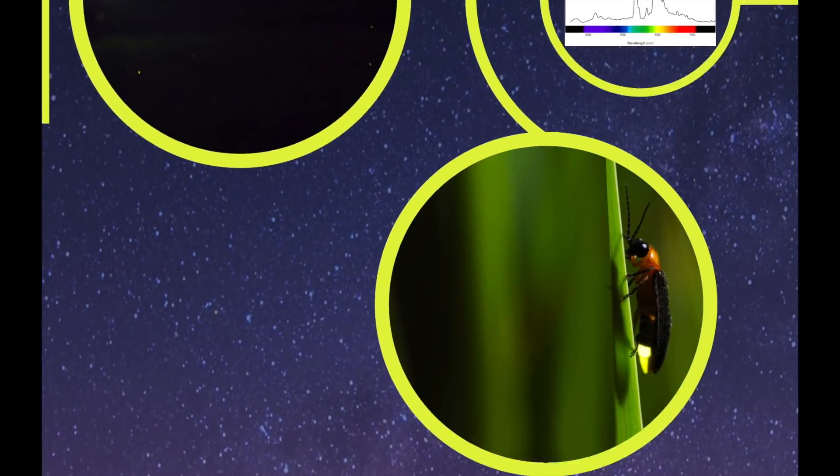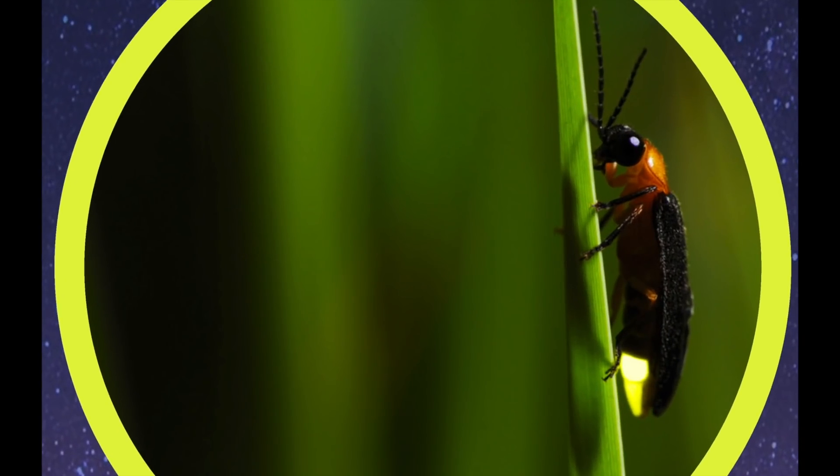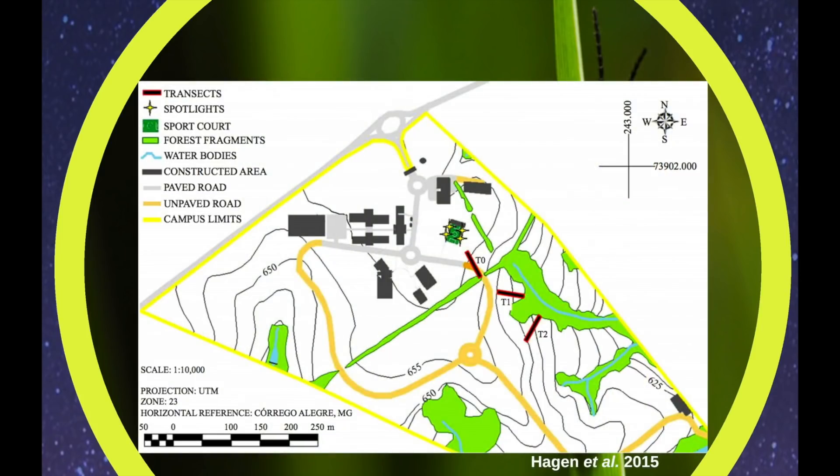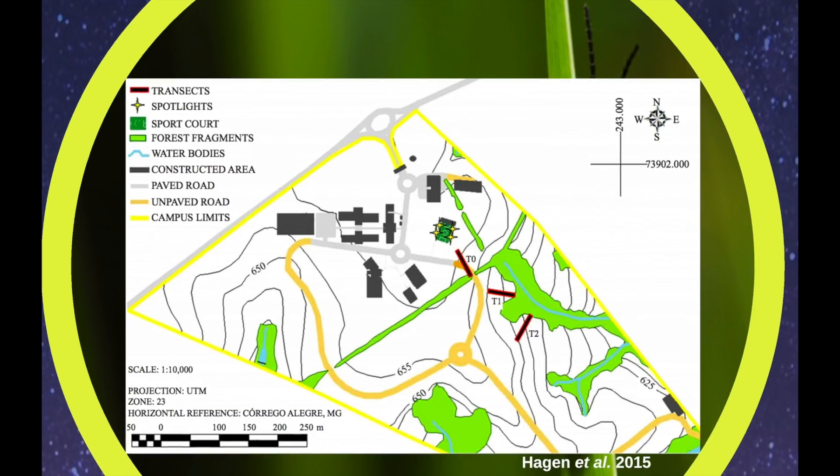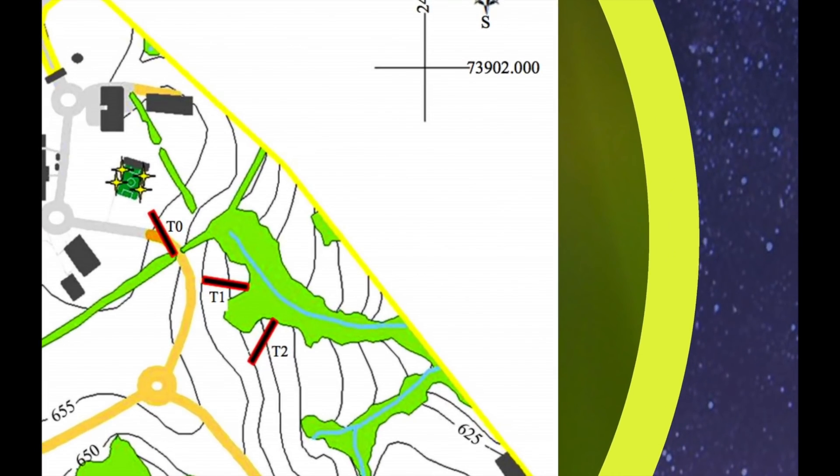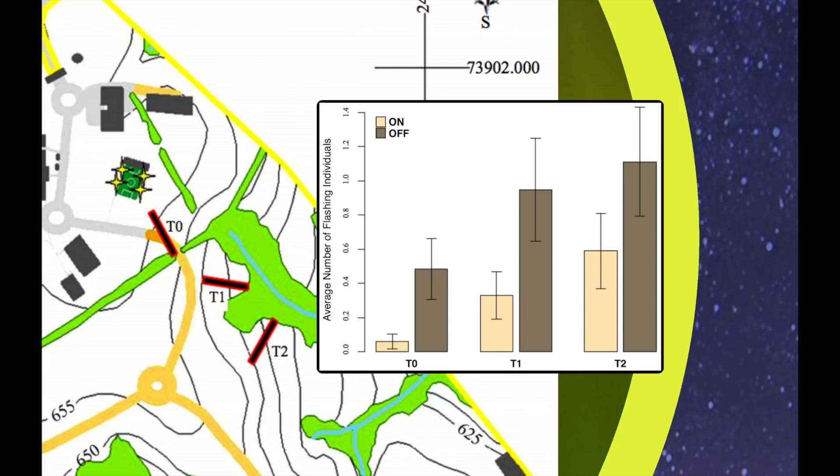So what about artificial light? Well we know that it's probably not that good. So here's a study from Brazil on a university campus where the author surveyed three transects at a certain distance from this big outdoor sport court illuminated by four super bright floodlights. And the authors found that on nights when the floodlights were on they saw many fewer fireflies than on nights when the floodlights were off. So the fireflies seem to be avoiding the light maybe.